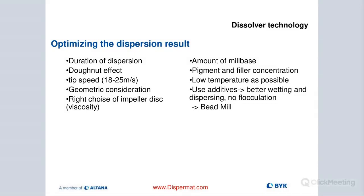If we're putting in too much tip speed, it's kind of like a diminishing return — we're not going to really gain anything. Geometric consideration: blade diameter in relation to our container vessel diameter — one-third is the ideal size, then you can vary that depending on your viscosity. And then the right type of impeller disc — there are different variations that you can look up on our website.